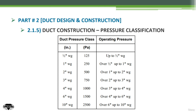If I have a fan with a pressure of 3.25 inches, I will go to the row from over three inch up to four inch, and I will choose 1000 Pascal or four inch as the duct operating pressure classification. This is the first input in the duct construction process table, which will allow you to bring further inputs including duct sheet metal thickness and other details.